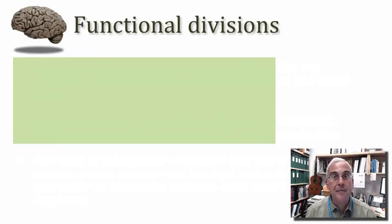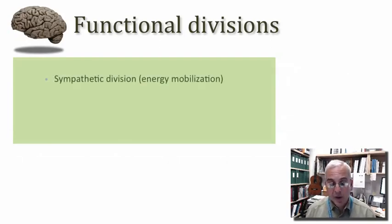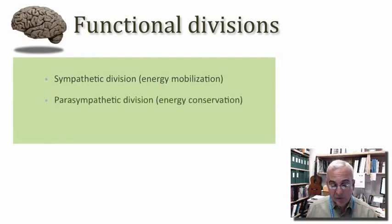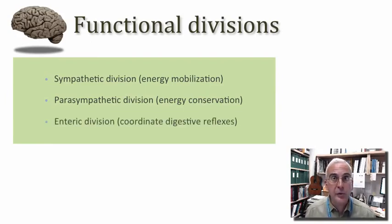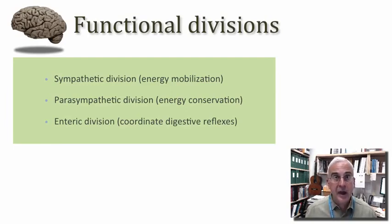With that said, we basically have three functional divisions of the visceral motor system. We have a sympathetic division, which is involved in energy mobilization, and a parasympathetic division, which is involved in energy conservation — giving you a feel for the complementary actions of these two principal divisions. There's also a third division: the enteric division, which governs the activities of our gastrointestinal tract and functions in a semi-autonomous way.